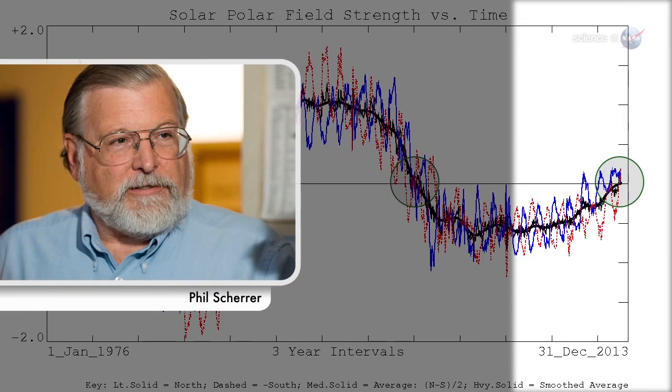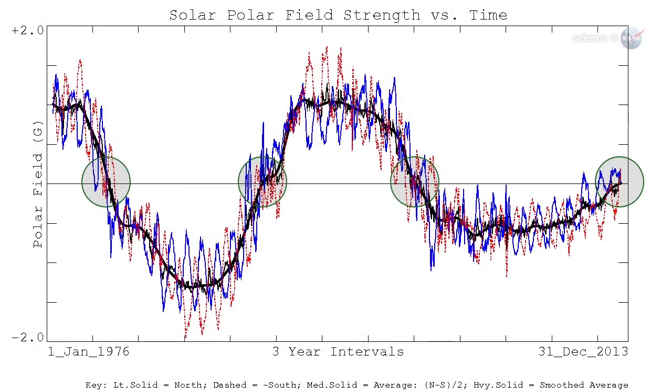Solar physicist Phil Shearer, also at Stanford, describes what happens. The Sun's polar magnetic fields weaken, go to zero, and then emerge again with the opposite polarity. This is a regular part of the solar cycle.